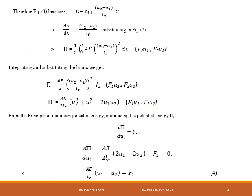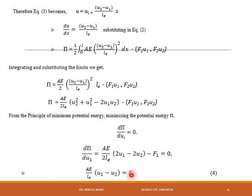In order to obtain the equilibrium of the system, from the principle of minimum potential energy, the potential energy must be minimized. The condition is to differentiate the potential energy functional with respect to each nodal variable and equate to zero. Differentiating π with respect to u1 and setting equal to zero: (Ae/2Le)·(2u1 − 2u2) − F1 = 0, giving (Ae/Le)·(u1 − u2) = F1.